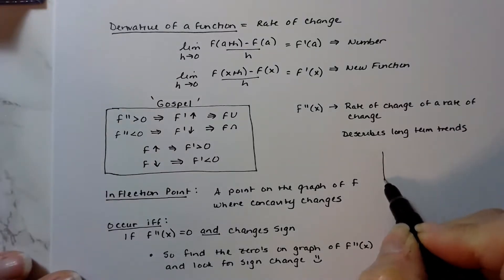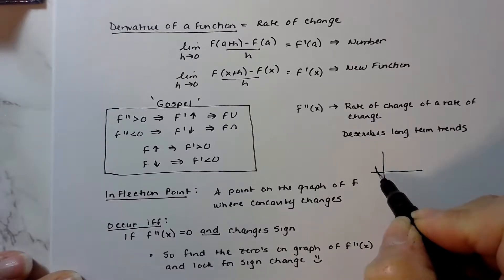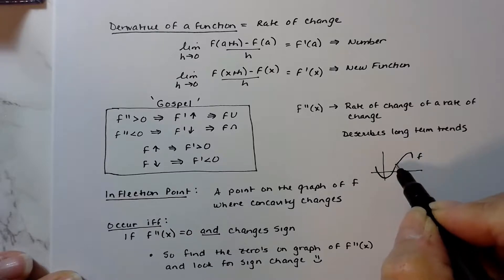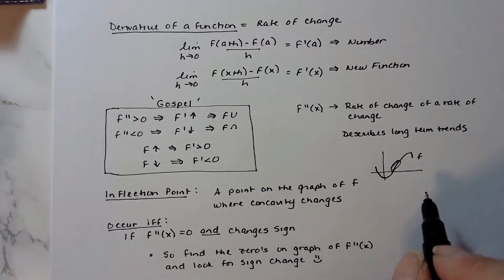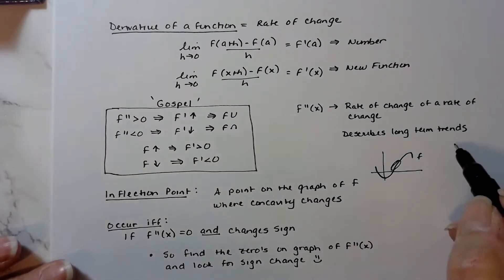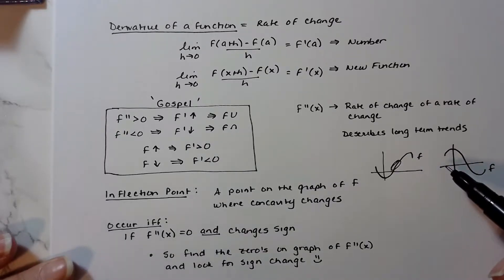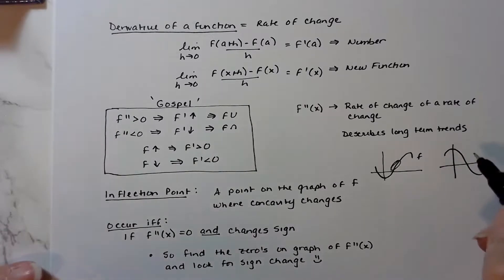Maybe you have a function f that looks something like this, and it's concave up here and concave down here, so somewhere in between that min and max, the concavity is changing from concave up to concave down. The other case could happen too, where maybe you have a function that looks like this, going from concave down to concave up. Regardless of how it's moving or what it looks like, the change in concavity is going to happen somewhere in between the max and min, and that's called an inflection point.